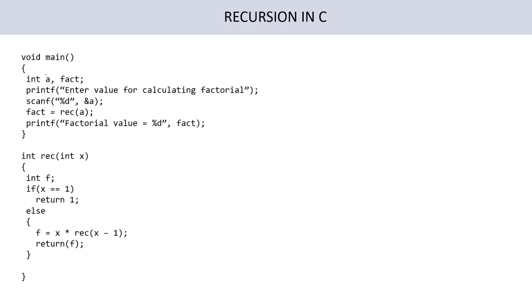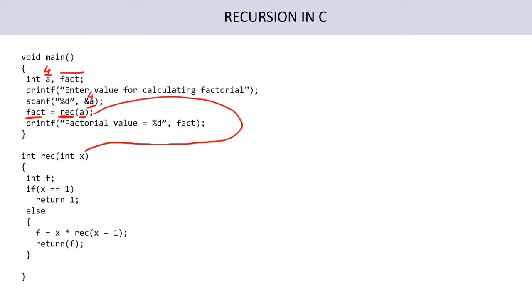In function main, we have created two variables: 'a' and 'fact'. I ask the user to enter a value — let's say factorial of 4, so variable 'a' will have value 4. I am calling a function 'rec' and passing value 'a' (which is 4). The return value will come to 'fact'. It will jump to the definition of 'rec', and the actual argument 4 will be passed to the formal parameter 'x'.